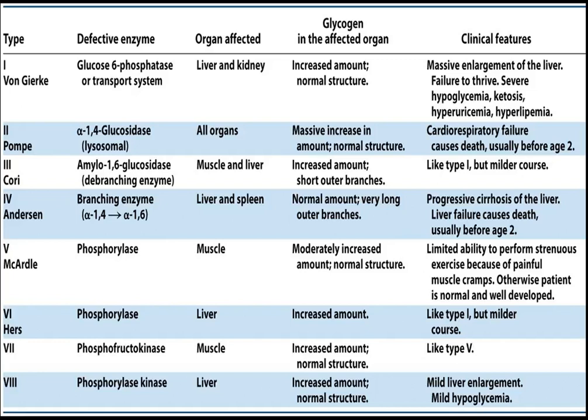Look at Type 1, Von Gierke disease, where the defective enzyme is glucose-6-phosphatase. I recently uploaded a video on that — if you want details, just go through that because it's very important for your examination. The organs affected are the liver and the kidney, the most important organs.